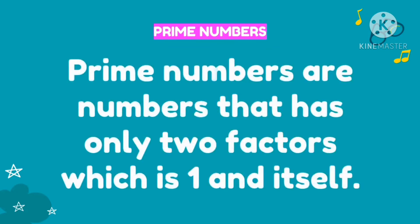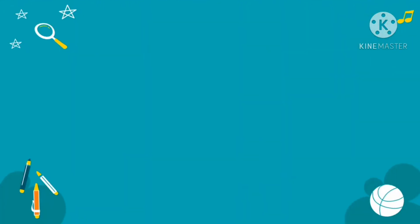Let's first define prime numbers. So a prime number or prime numbers are numbers that has only two factors which is one and itself. Here are some examples of prime numbers. So we have 7. So the factors of 7 is or are 7 and 1. So that's 1 and the number itself.